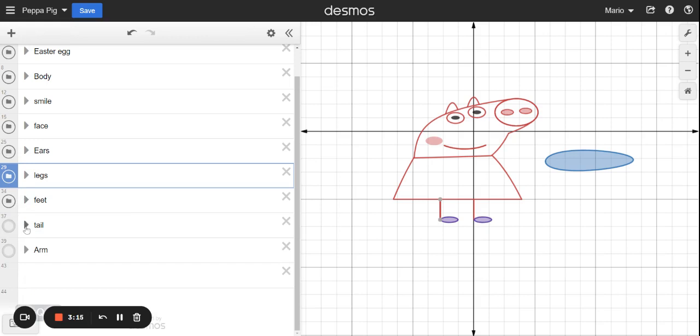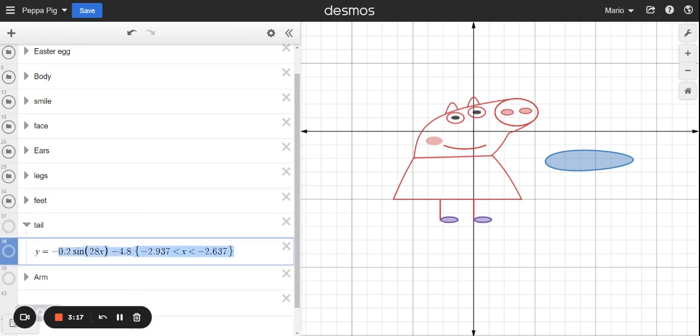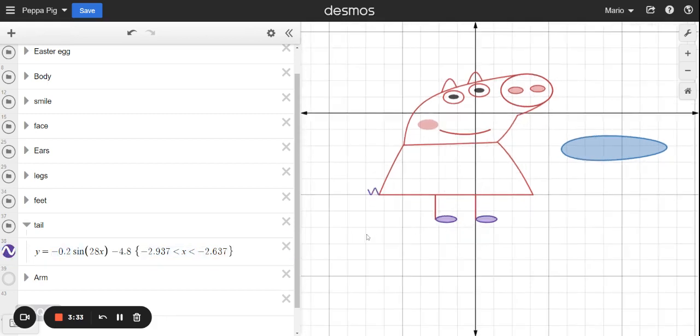The tail. The tail was a really hard one. So the tail is actually a sine function, sine wave. So there it is. And I just put a restriction on the range. Sorry, on the domain. Those are the restrictions for the domain of the sine wave. And that is basically the tail. I think that was pretty cool. That was pretty clever.